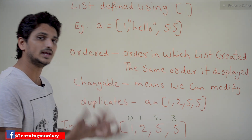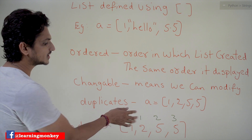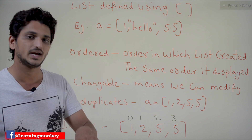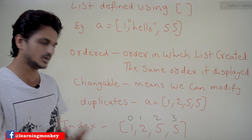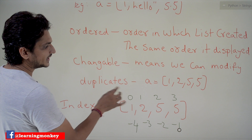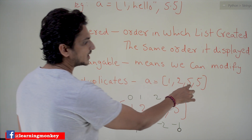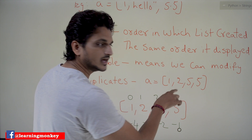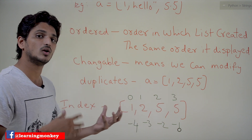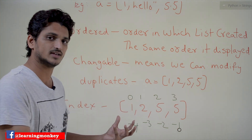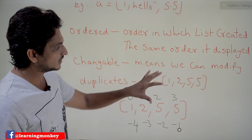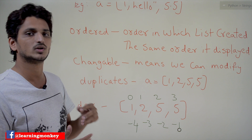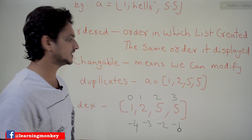A list allows duplicates. Some other data types we will discuss in next classes don't allow duplicate values. For example, a = [1, 2, 5, 5] — duplicate values are allowed here. For now we will focus on how to define the list and what operators and methods are present in the list.